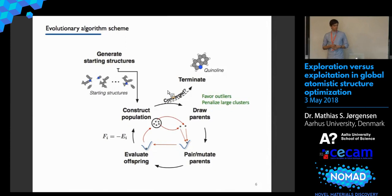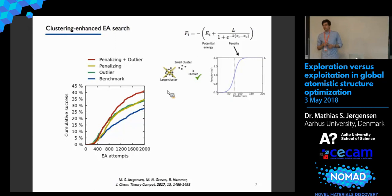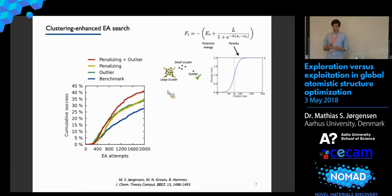Looking at results from 800 restarts: the blue curve is the benchmark without clustering. The green curve shows performance when we favor outliers in the population, forcing the algorithm to use outliers as parents whenever present — already showing a performance gain. We can also penalize structures in large clusters by adding penalty terms to the fitness function, yielding a similar performance gain, though this effect only kicks in after around 600 attempts, presumably when clusters have grown large enough. Applying both techniques together shows an additive effect.